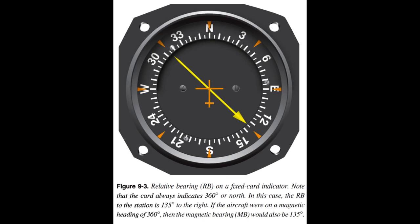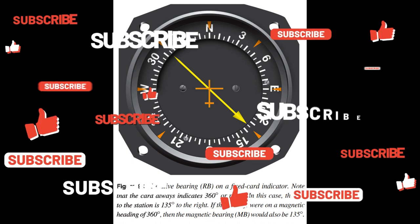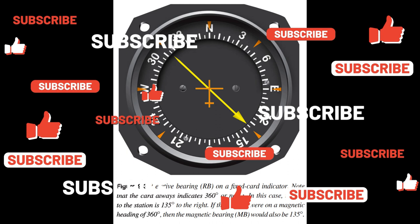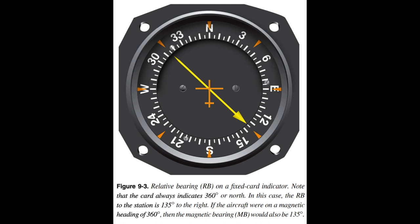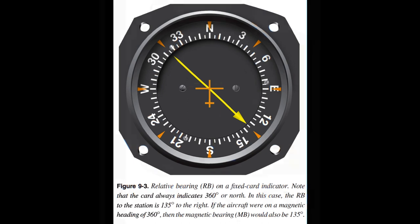Fixed card ADF, also known as the relative bearing indicator (RBI), always indicates zero at the top of the instrument, with the needle indicating the RB to the station. It indicates an RB of 135 degrees; if the MH is 045 degrees, the MB to the station is 180 degrees (MH + RB = MB to the station). The movable card ADF allows the pilot to rotate the aircraft's present heading to the top of the instrument so that the head of the needle indicates MB to the station and the tail indicates MB from the station.